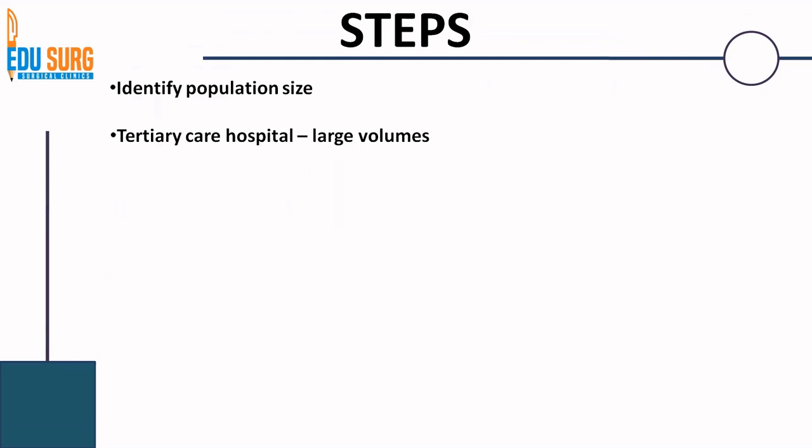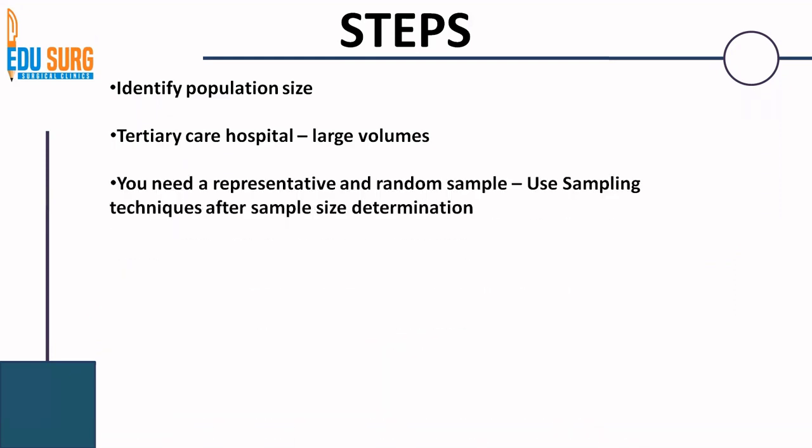Logically, the steps are: first, identify the population size. Since this is a tertiary care hospital catering to large volumes, you need a sample — you can't study the entire population. We have already seen that you need a representative and random sample so that the statistics calculated from the sample can help in prediction of population parameters. You use sampling techniques studied previously, after sample size determination.